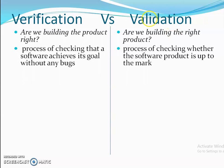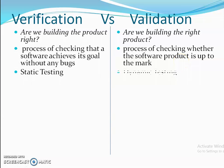The process of checking that software achieves its goal without any bugs is known as verification. Whether the software product is up to the mark — that is known as validation. Validation is based on the final product outcome.